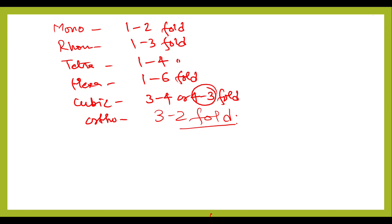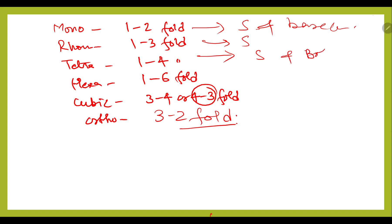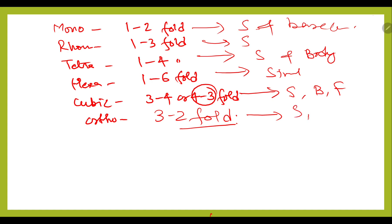All 14 kinds of Bravais lattices are available, associated with the seven crystal systems. Monoclinic has simple and base-centered. Rhombohedral has simple. Tetragonal has simple and body-centered. Hexagonal has simple. Cubic has simple, body-centered, and face-centered. Orthorhombic has four kinds: simple, body-centered, face-centered, and base-centered. These are the 14 Bravais lattices.